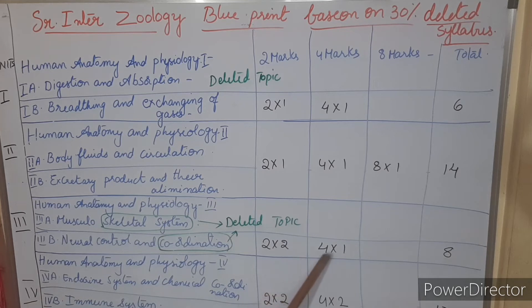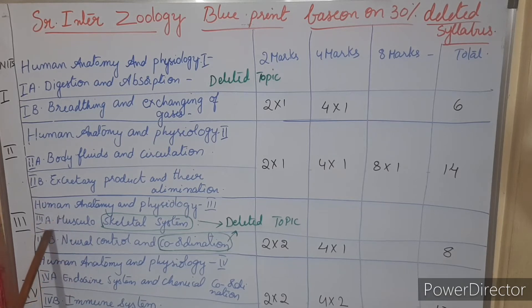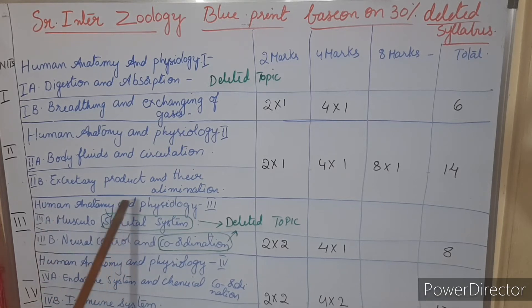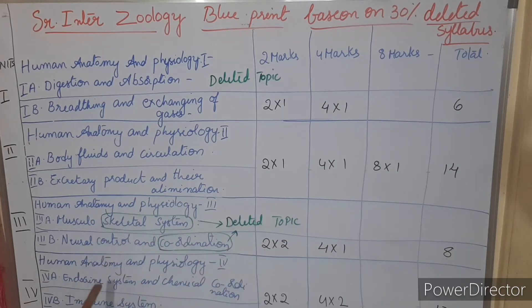We may get two two-mark questions and one four-mark question from Neural Control or the Musculoskeletal system. Focus on these two sub-units. Don't read or waste time on deleted topics.